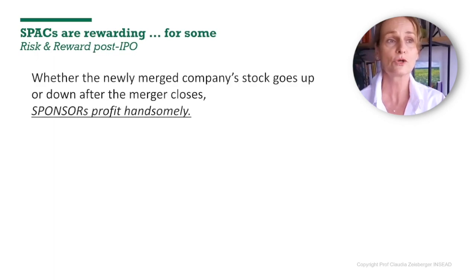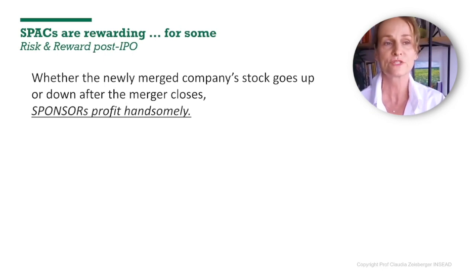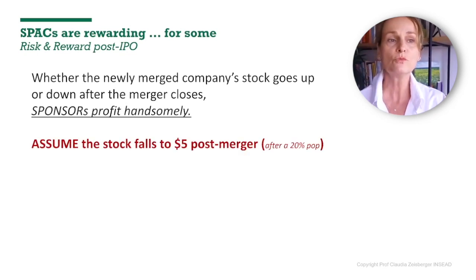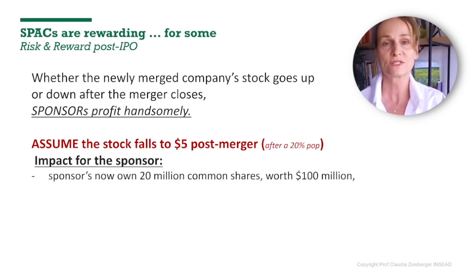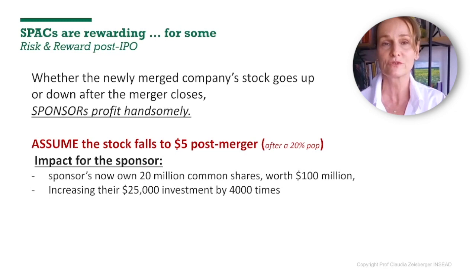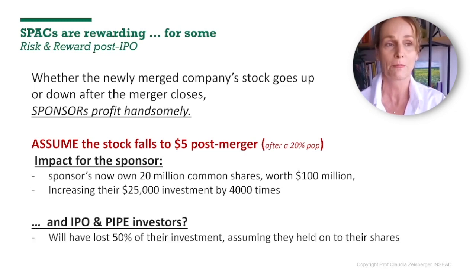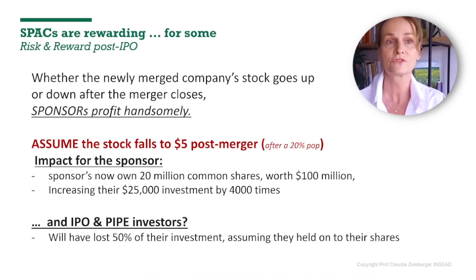SPACs are indeed rewarding — well, at least for some. Sponsors usually profit quite handsomely, whether the company's stock goes up post-merger or down. Assume the share price falls to $5 post-merger, but after it had initially popped beyond 20%. The sponsor now owns 20 million common shares worth $100 million at $5 per share. That increases their $25,000 investment by 4,000 times — 4,000X. The IPO and PIPE investors, depending on where they bought, will have lost about 50% of their investment, or potentially more if they bought after IPO and after the share price popped.